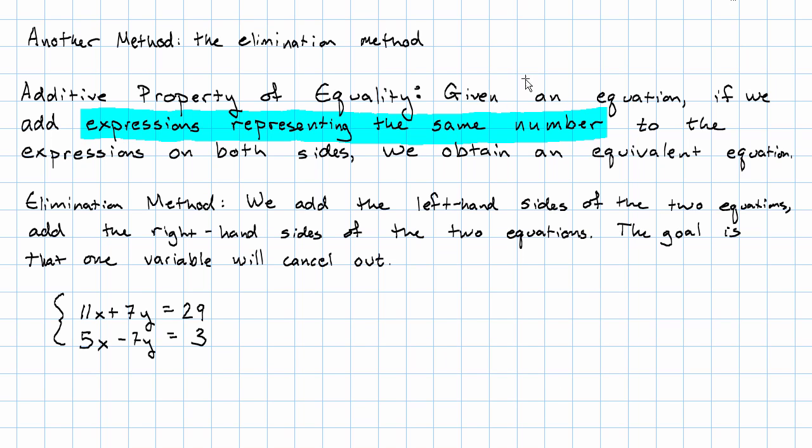So again, we have this system. The first equation gives us two expressions that represent the same number. The second equation also gives us two expressions that represent the same number. And therefore, when we add together the left-hand sides, we get the same result as when we add together the right-hand sides.